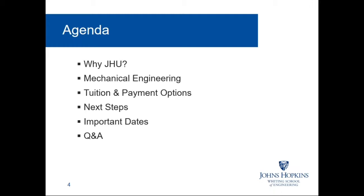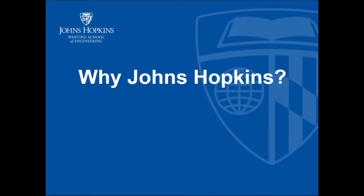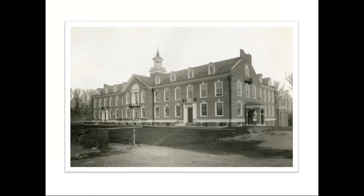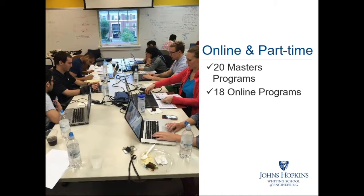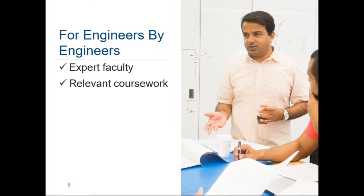So why study engineering at Johns Hopkins University? Johns Hopkins University was founded in 1876 as the nation's first research university. The School of Engineering opened its doors in 1913, and in 1915 it began offering part-time engineering coursework as night classes for technical workers. Since then we've grown to offer more than 20 master's programs that can be completed part-time, 18 of which can be completed entirely online. Our programs are designed by people who thoroughly understand your industry. Our faculty are all expert and working engineers and technical professionals. Our faculty and instructional designers construct new and update existing coursework every year so that it includes the most up-to-date information.